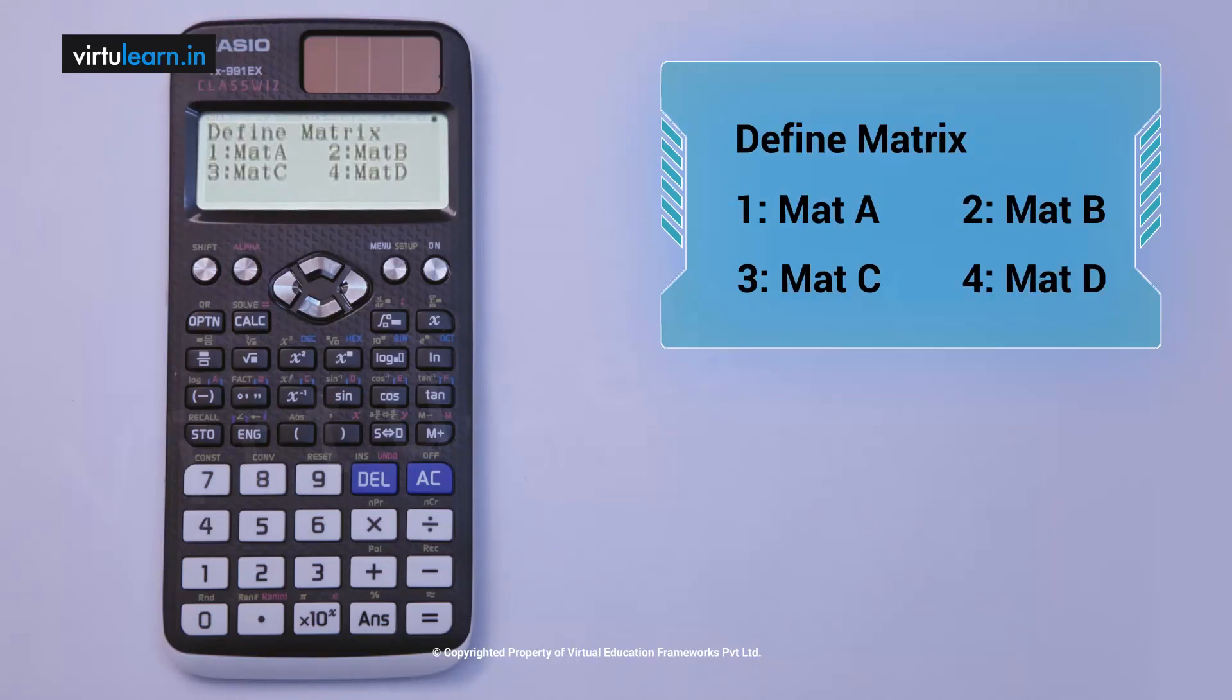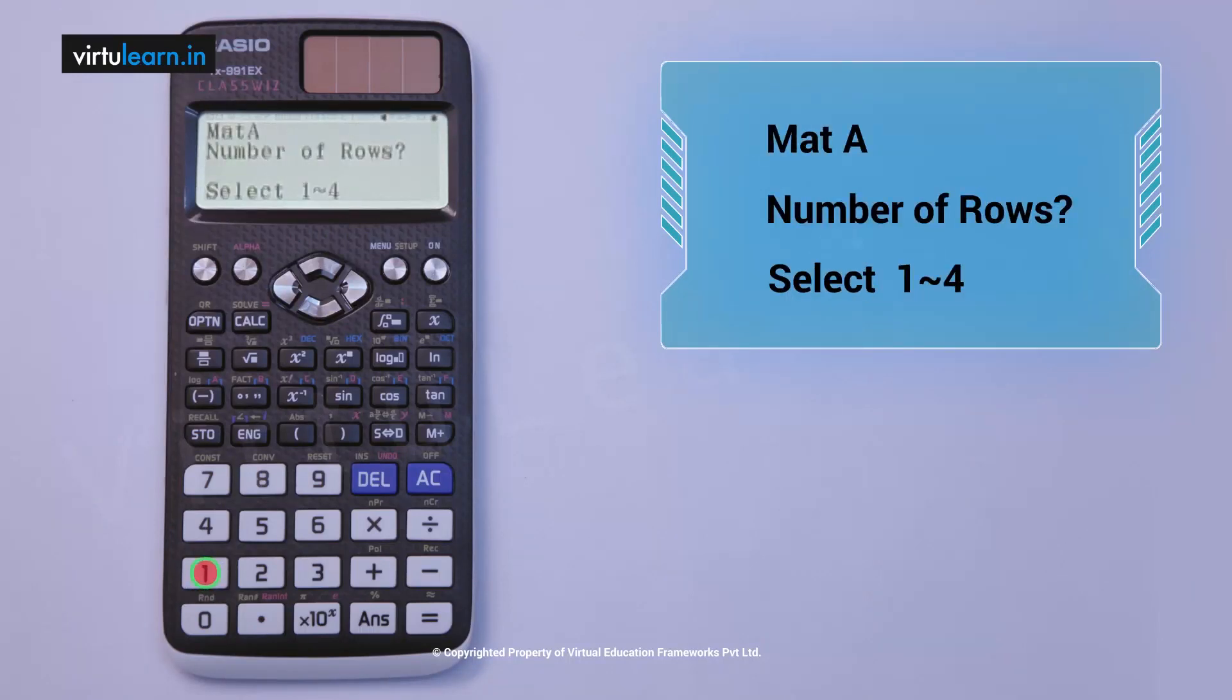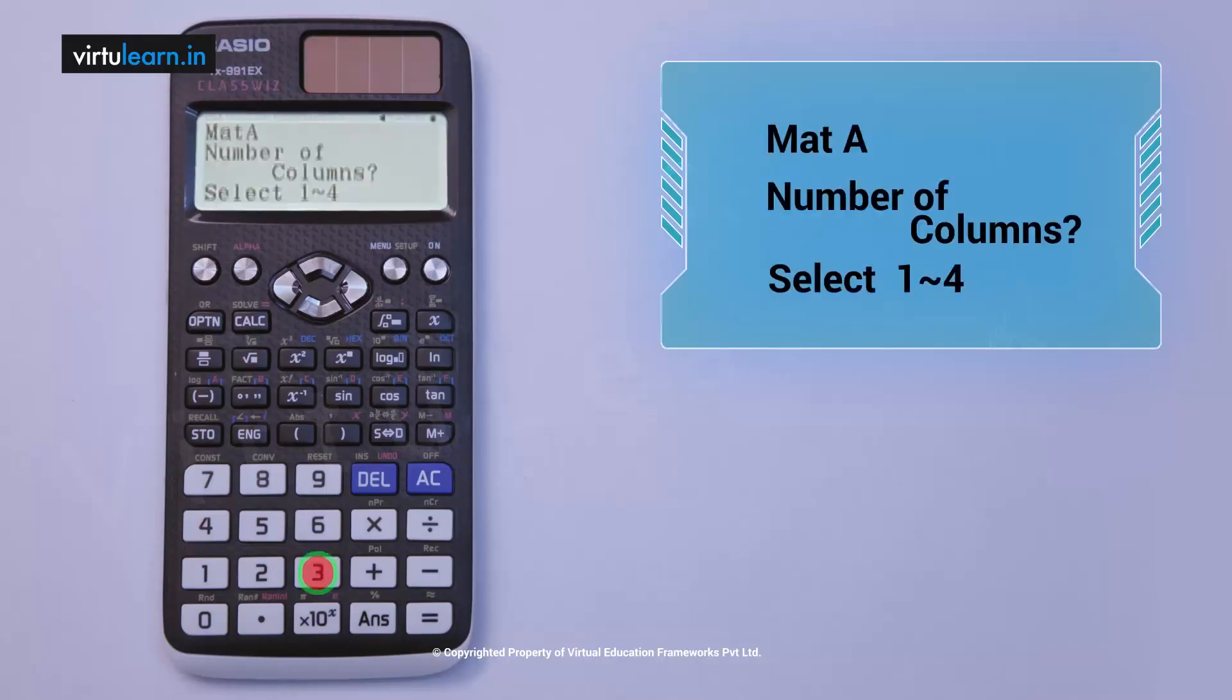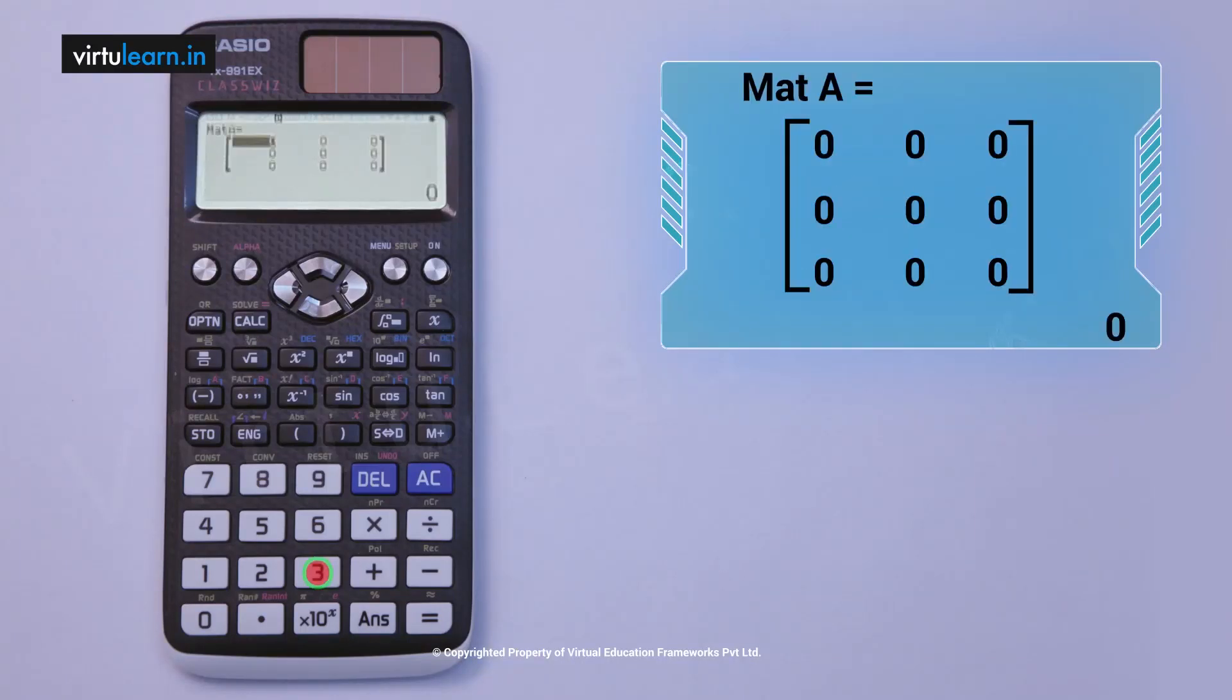Number of rows: how many rows we have to enter? Press the number three, meaning three rows. Number of columns: how many columns we have to enter? Three columns. We got one matrix notation with all elements as zero: three rows and three columns with nine elements.